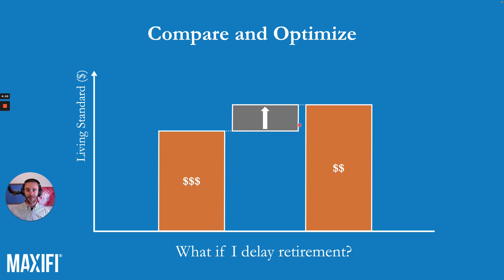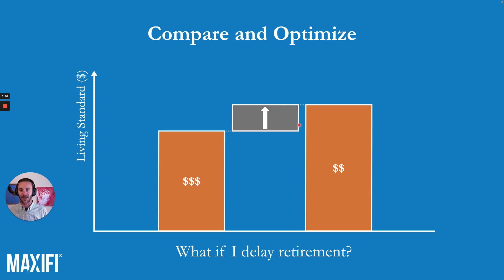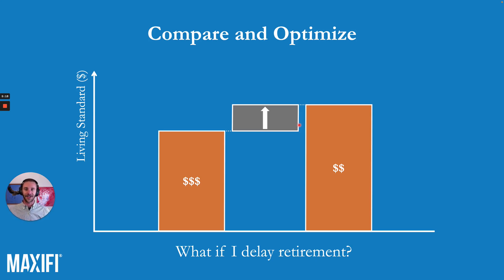Using the same process, Maxify can also increase or optimize your highest affordable living standard through what we call money magic — identifying things in your life, now or in the future, that can further increase and add cushion to that highest affordable living standard, without taking unnecessary risk. That might include tax planning, Roth conversions, different charitable giving strategies, or how you plan to distribute income in retirement. Delaying social security, for example, is a big one. All of these can be explored in Maxify to compare scenarios and optimize your highest affordable living standard.